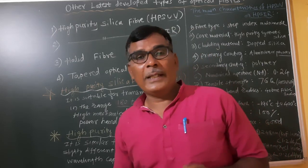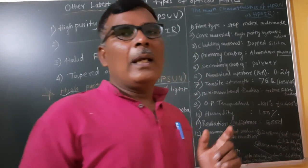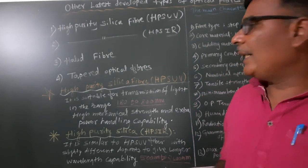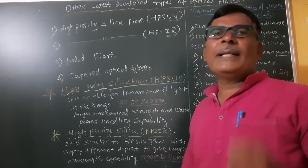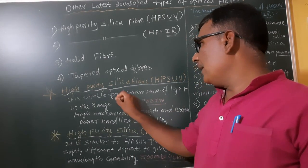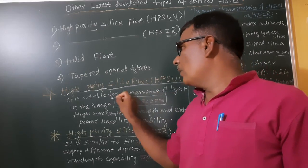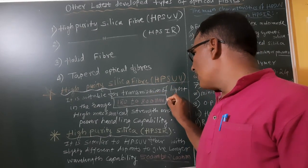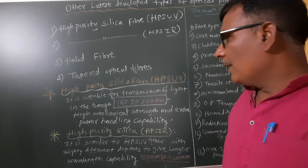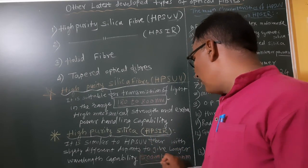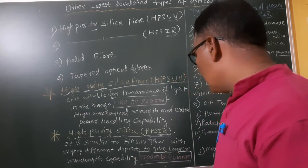The first fiber is high purity silica HPSUV, and this fiber has a transmission wavelength of approximately 180 nanometers to 800 nanometers. This is a very important distinguishing condition between HPSUV and HPSIR, because the high purity silica HPSIR fiber transmits at a wavelength of approximately 500 nanometers to 2600 nanometers.